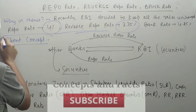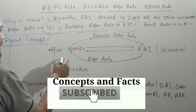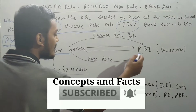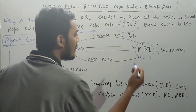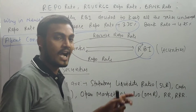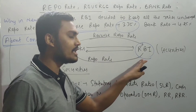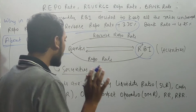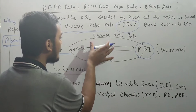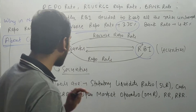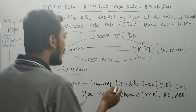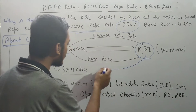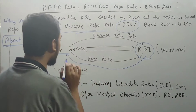To understand the concept, remember that there are other banks and there is the main central bank of India — the RBI, also known as the Central Bank of India. Whenever the RBI lends money to the other banks, those banks have to pay interest on that money.